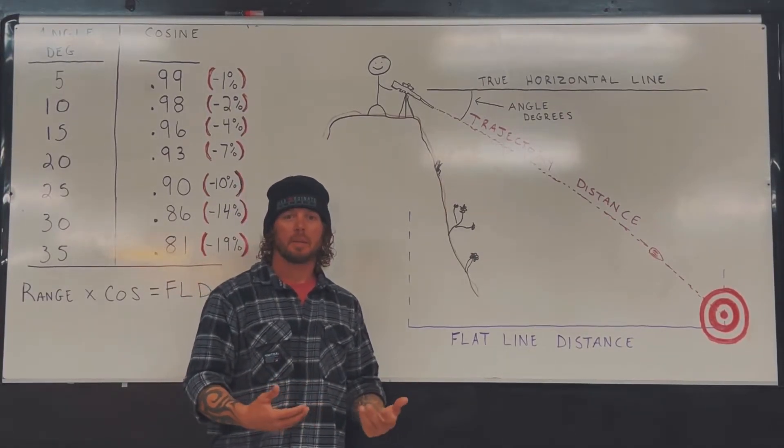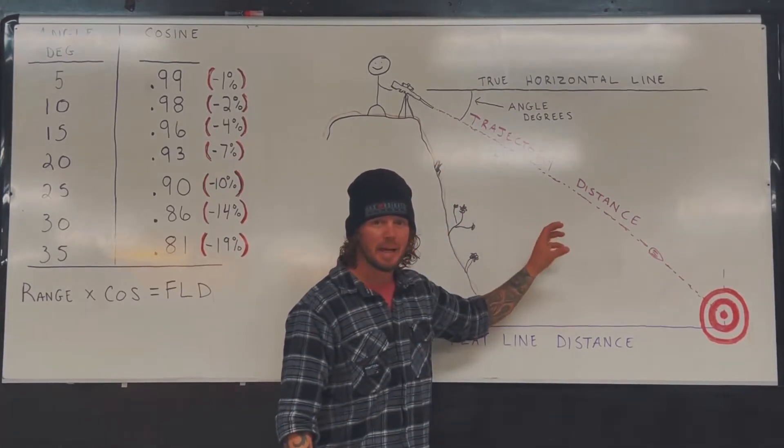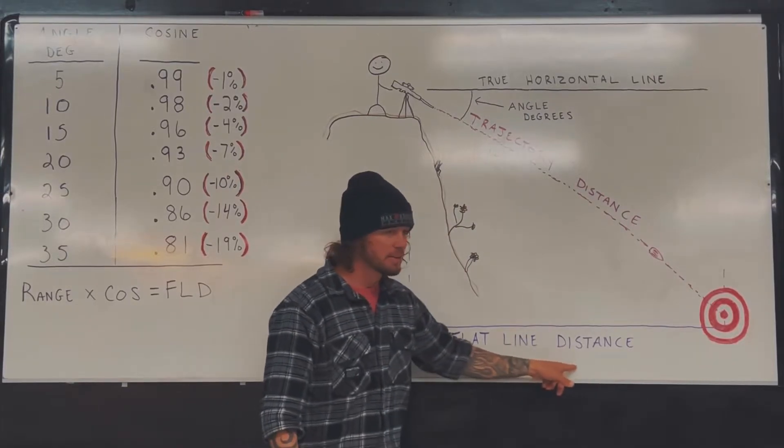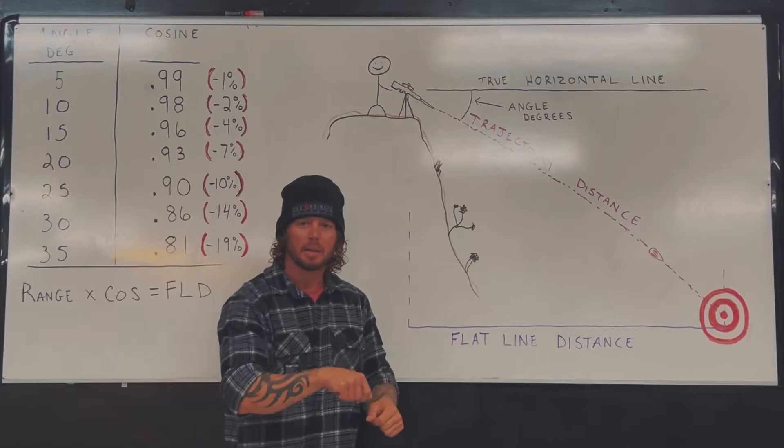So 400 yards minus 80 for my 35 degree angle - that puts my flat line distance at 320 yards. That is what I'm dialing or holding. Dial on my scope or hold on my reticle to engage that target.